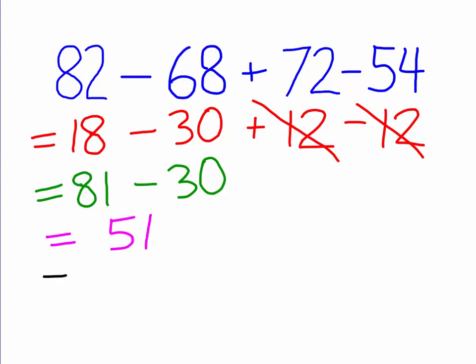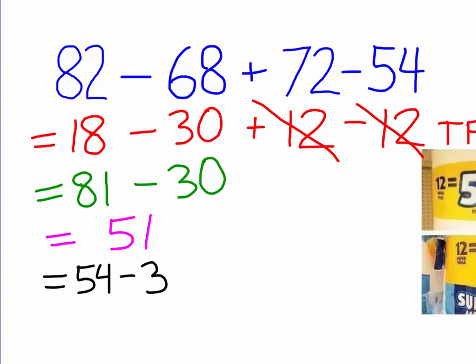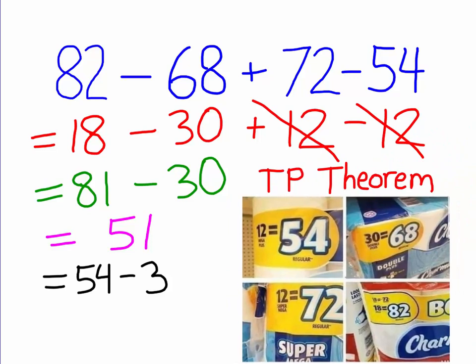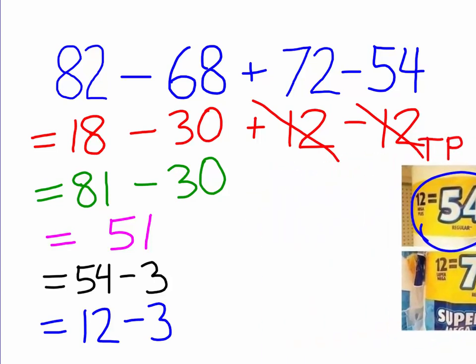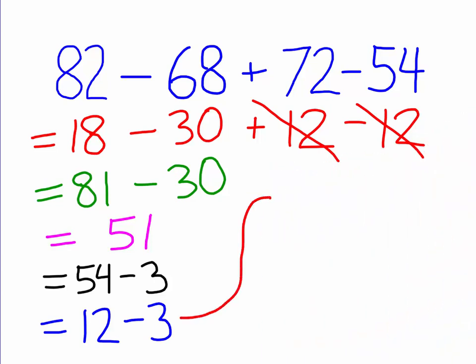All right. Now, 51, that is equal to 54 minus 3. And once again, consulting the power of toilet paper math, 54 is equal to 12. 12 minus 3. Let's see. That is equal to 9.